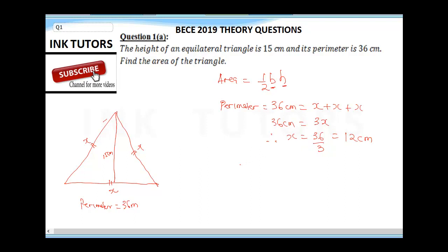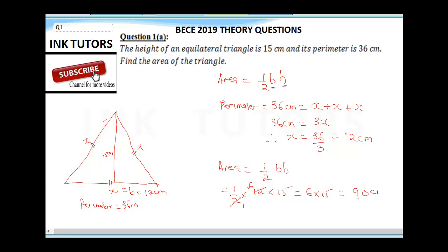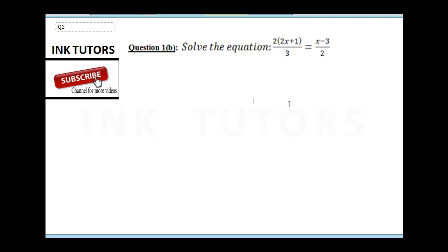Now we have our base, which is x equals 12 cm. The area will be half times base times height: half times 12 times 15. Two into 12 gives us 6, so this becomes 6 times 15, which equals 90. Don't forget your units — the answer is 90 cm squared because it's an area.